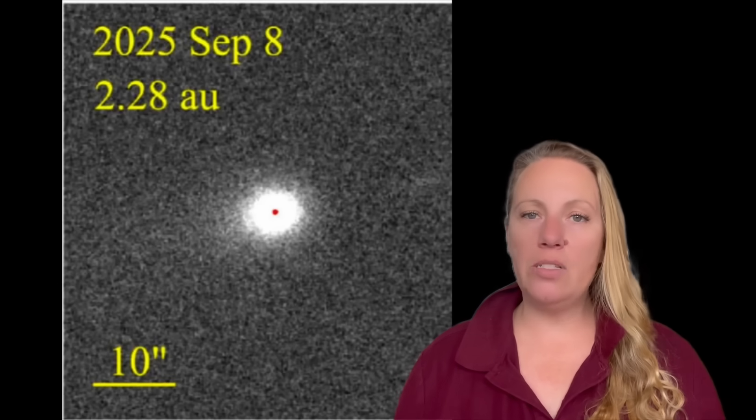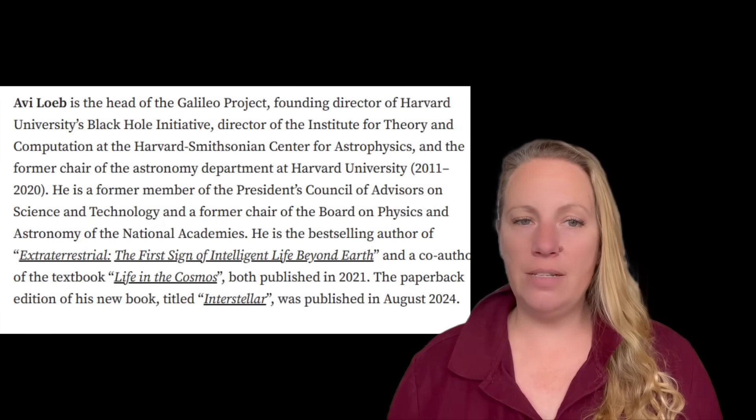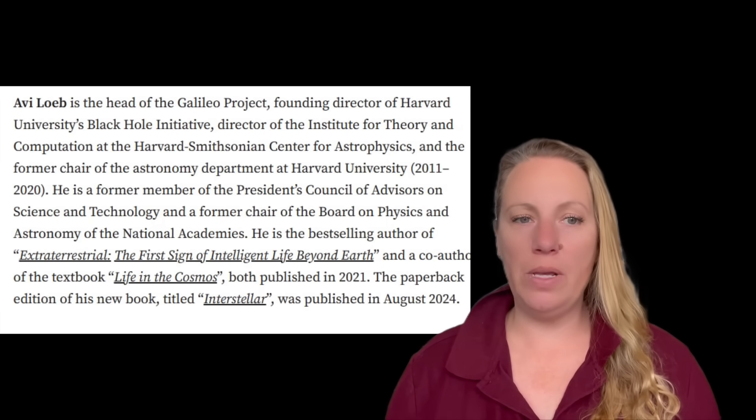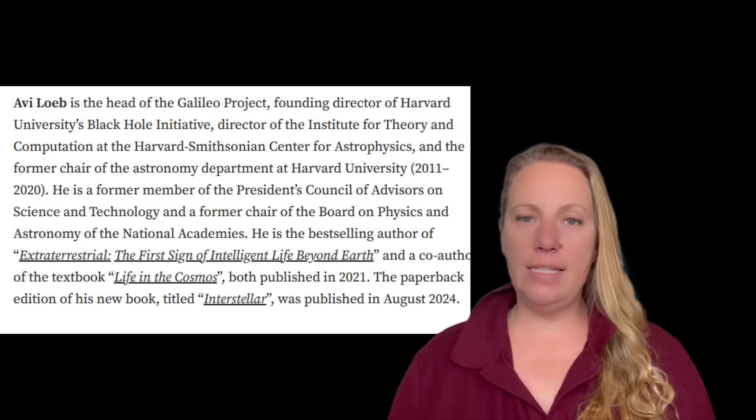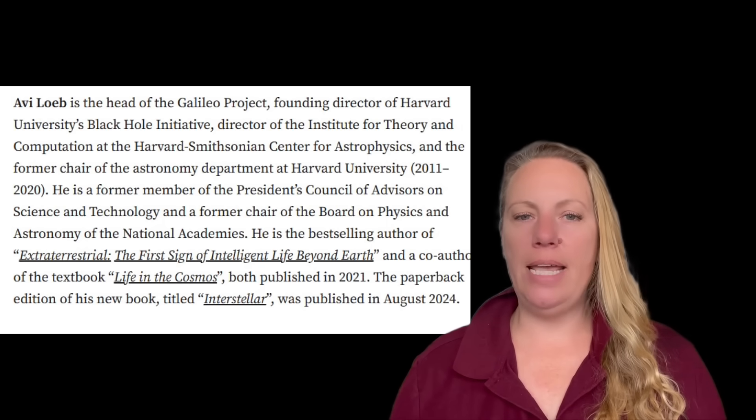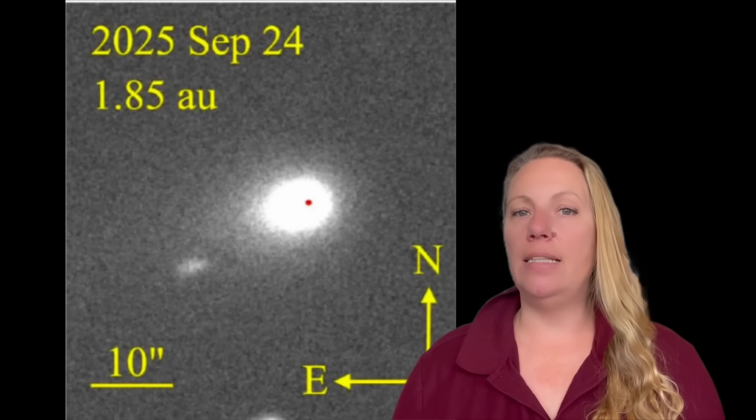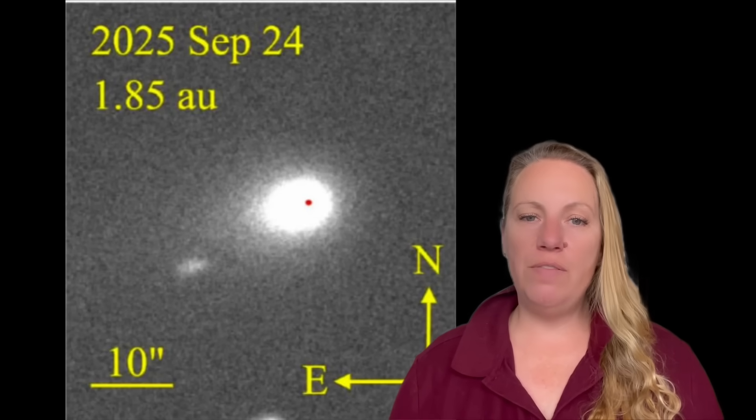And then we have the artificial technological scenario. It's a very speculative scenario, yes, I admit. It's mainly championed by Avi Loeb, this Harvard researcher. I'll put his bio here so you can see it. It's quite an impressive bio. And there's some other researchers that agree with him. In that case, he says, four out of ten, he gives 3i Atlas the possibility that it might be an alien probe or piece of technology, perhaps a relic, or even a deliberate visitor.